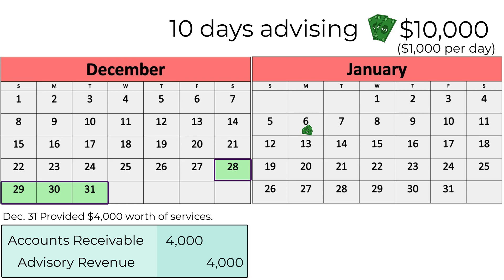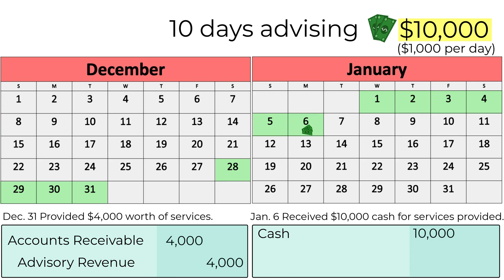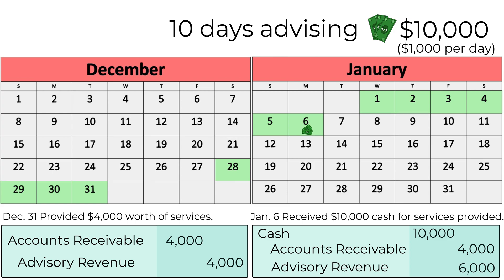Fast forward to January 6th when the contract is complete and we are owed $10,000 cash. When the customer pays, we record a debit to cash for $10,000, a credit to accounts receivable for $4,000, and a credit to advisory revenue for $6,000.